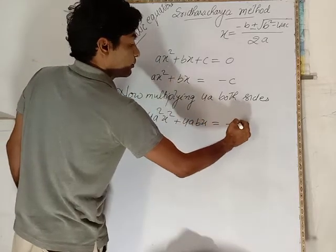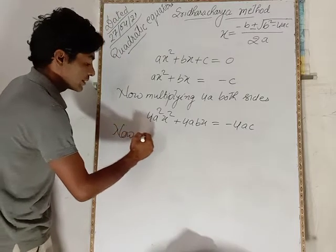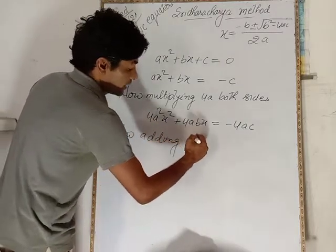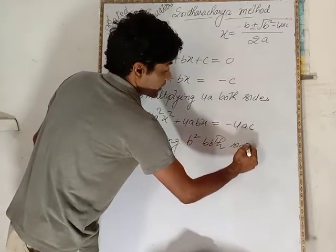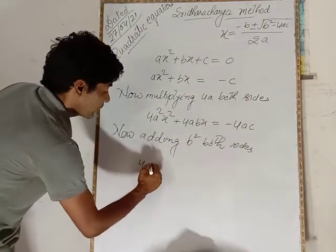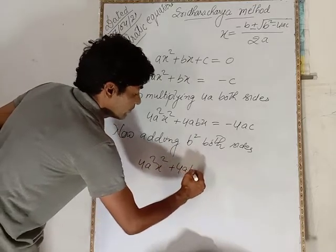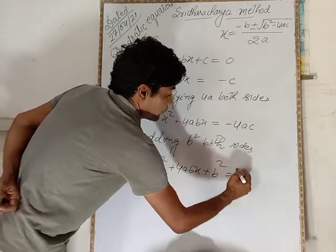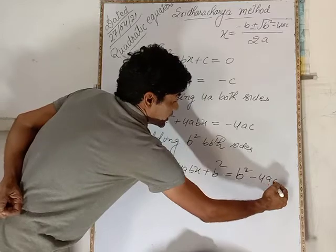Now adding b² both sides. 4a²x² plus 4abx plus b² is equal to b² minus 4ac. Right?